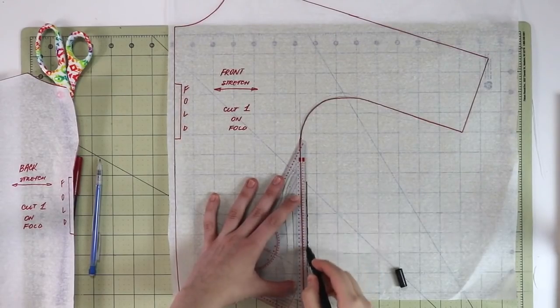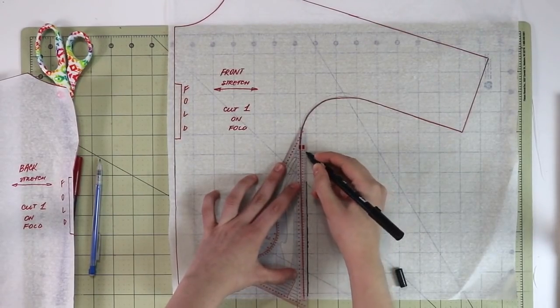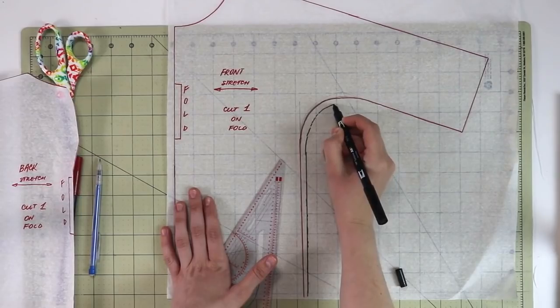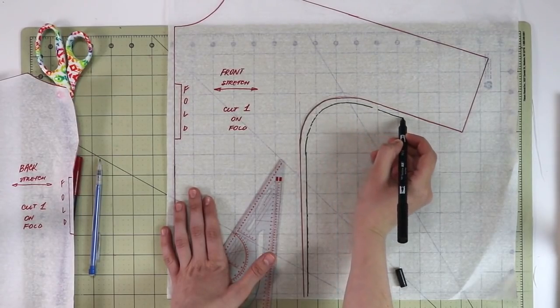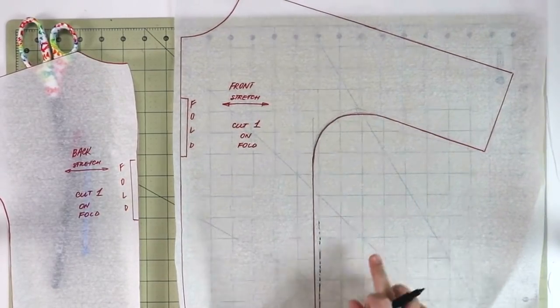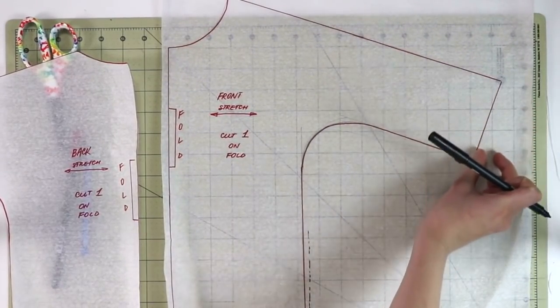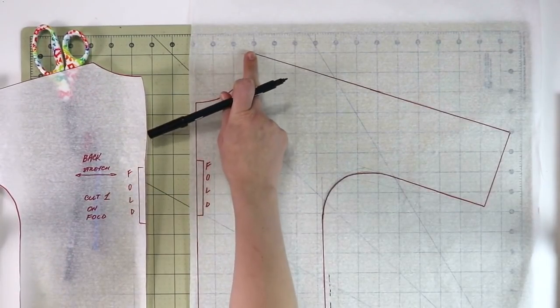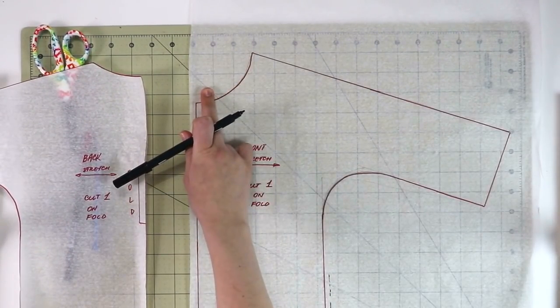If you prefer to see your seam allowances on the pattern, you have drafted your pattern, you open up your pattern, and then you add your seam allowances. So let's say you want to add a quarter of an inch, you add a quarter of an inch seam allowances all the way around. You will add seam allowances on the shoulder, and then you will add your hem allowances at the sleeve and on the bottom. And don't forget your seam allowances on the neckline as well.